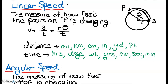Linear speed is just a rate, just like when we get in a car and travel down a highway. Sometimes we're going 25 miles per hour, sometimes 65 miles per hour. Distance — our arc length — is typically measured in miles, kilometers, centimeters, inches, yards, or feet. The time is typically measured in hours, days, weeks, years, months, seconds, or minutes. Since it's a rate, we would always use some measure of distance over some measure of time, like miles per hour, feet per second, or kilometers per week.